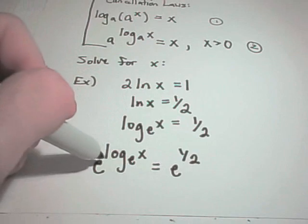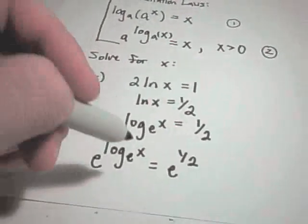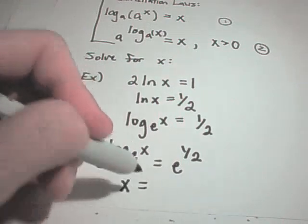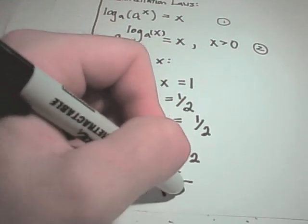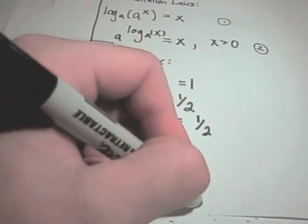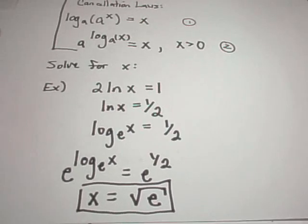On the left side, by this cancellation law, it says whatever's inside the logarithm, that's what you're left with. So, I'll simply get x is equal to e to the 1 half or equivalently square root of e and that'll be my solution to this original logarithmic equation.